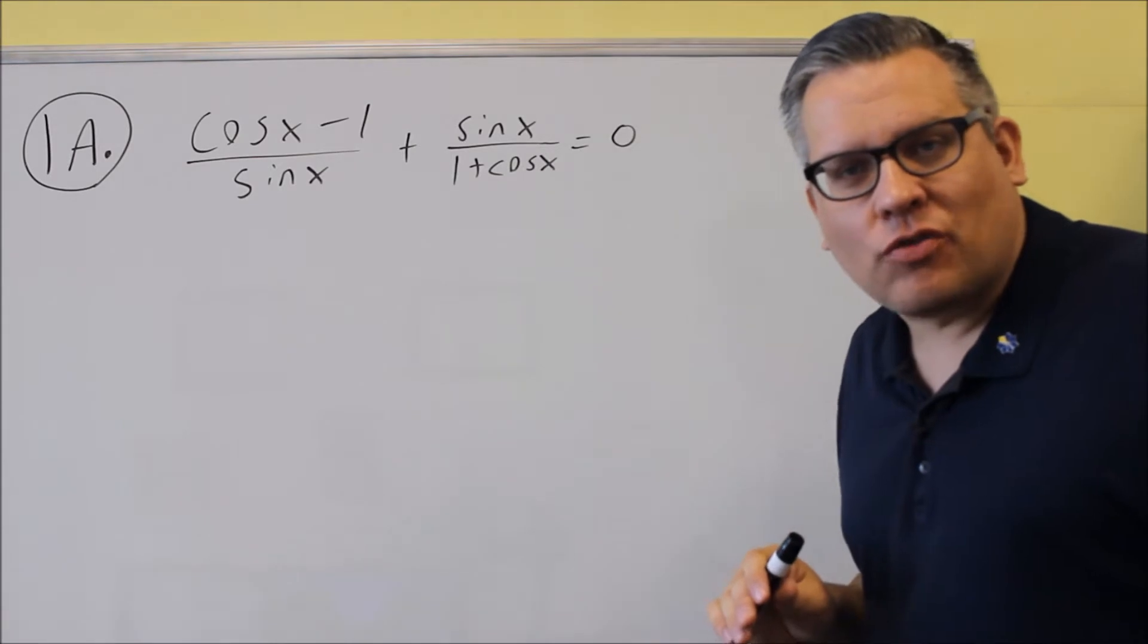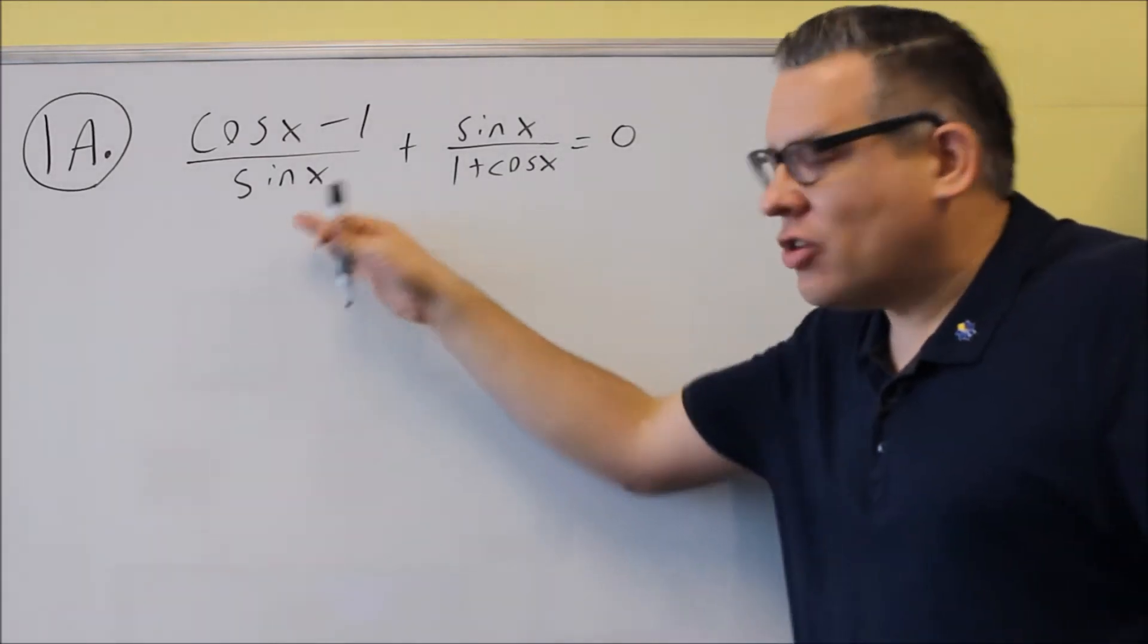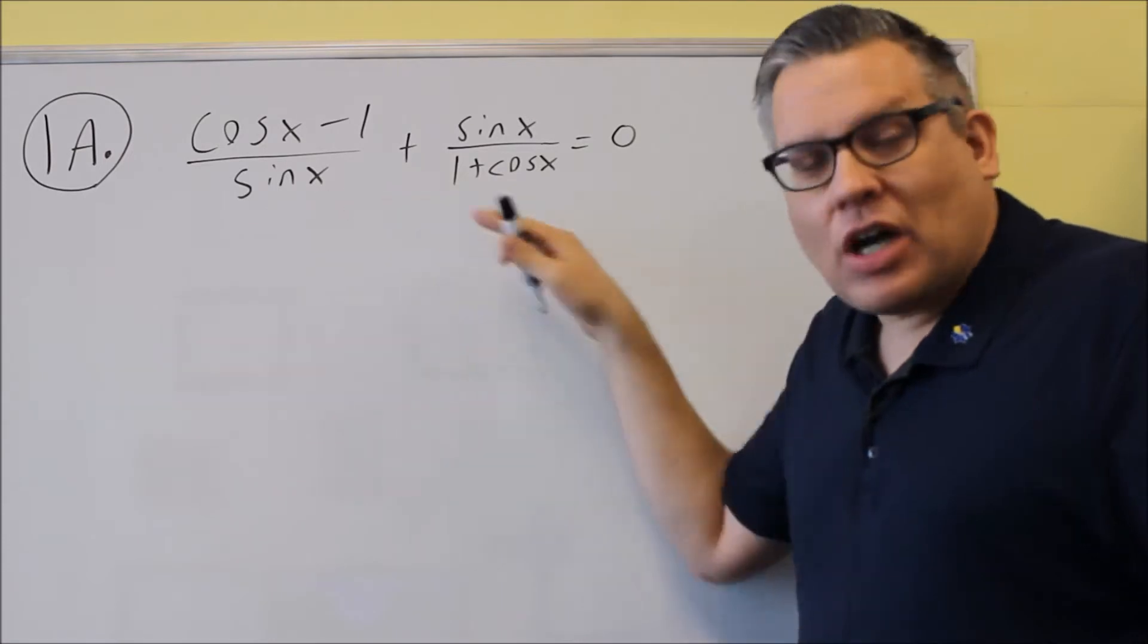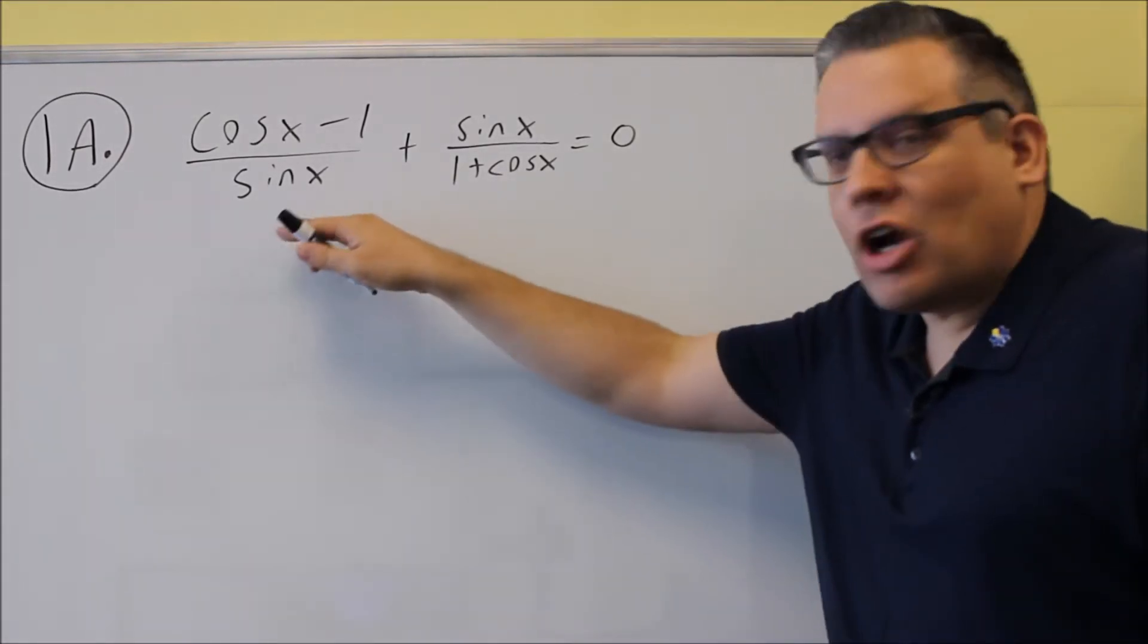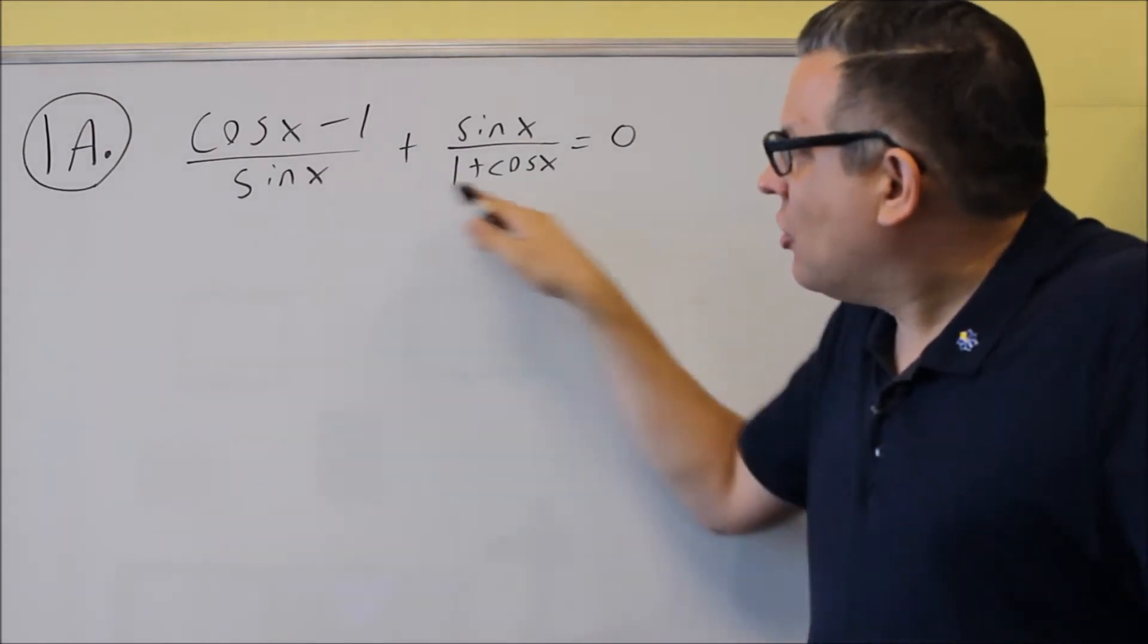Now everything is already written in terms of sines and cosines. So the next strategy we're going to go to is getting common denominators because we see we have two fractions here. So that's what we're going to start with. We want to get common denominators with these here.